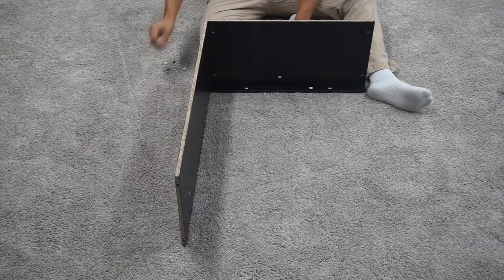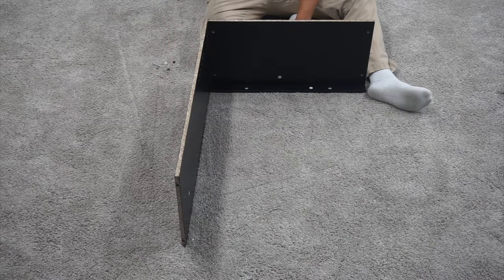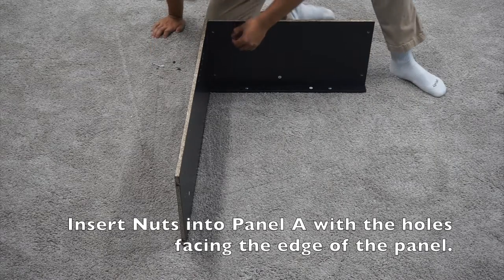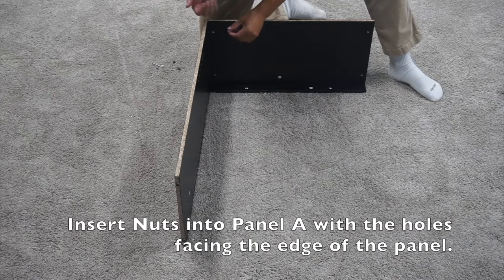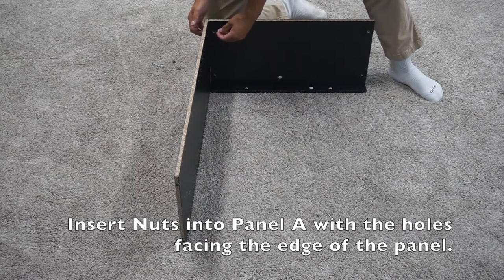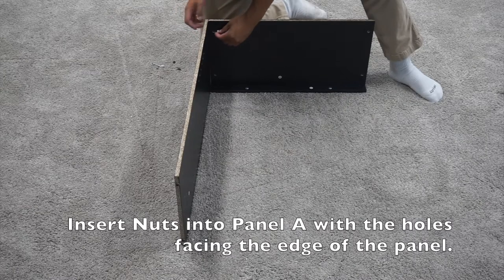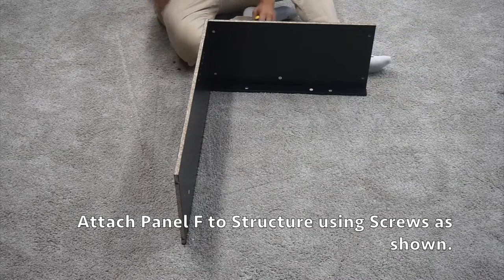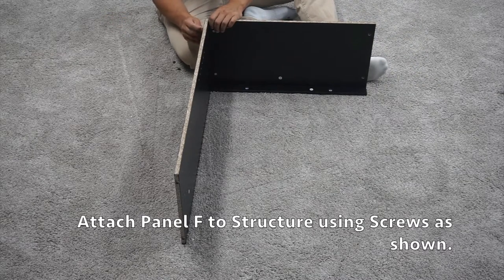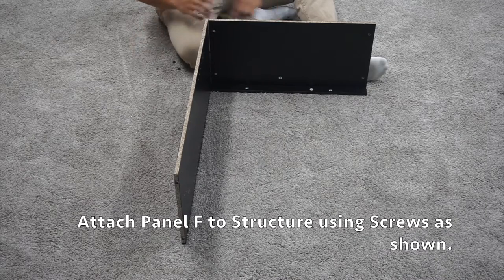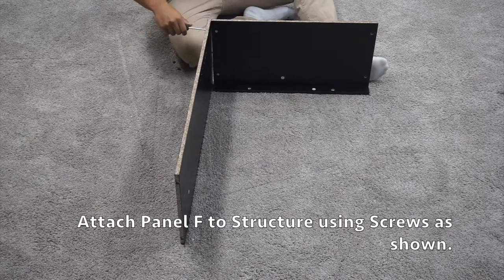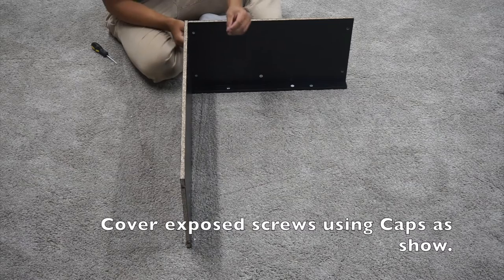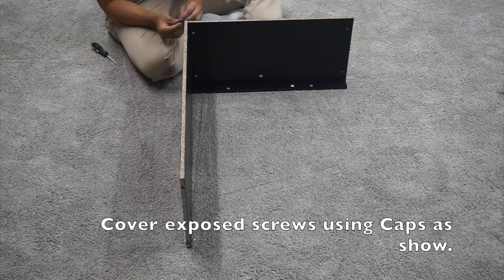Then you will need two screws, two nuts, and two caps. You will want to insert the nuts into this A panel so that the hole is facing out towards this so that the screw can insert into it. Then you will want to insert the two screws through the F panel into the A and tighten it down. After you have inserted the two screws, you can then attach the caps to cover them up.